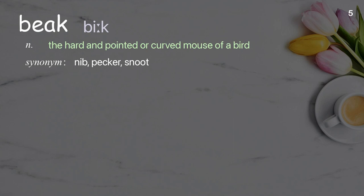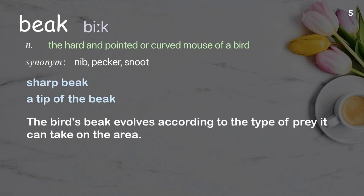Beak. The hard and pointed or curved mouth of a bird. Examples: Sharp beak, a tip of the beak. The bird's beak evolves according to the type of prey it can take in the area.